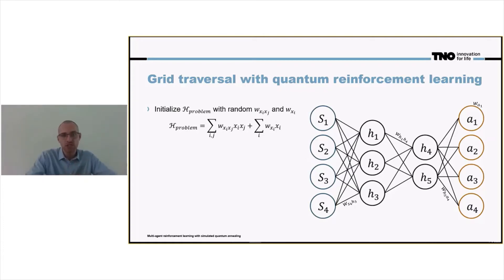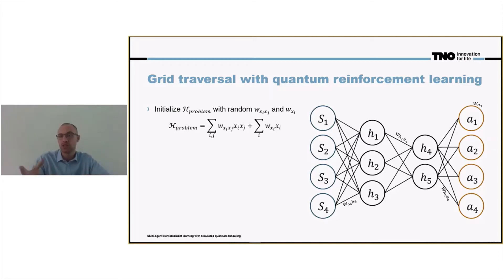Now, what you see is cross terms — W·X_i·W·W·W·X_i·X_j — and you see single qubit terms, single node terms.